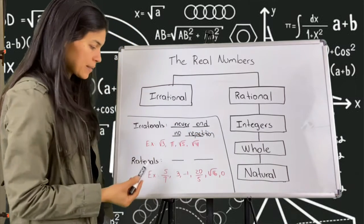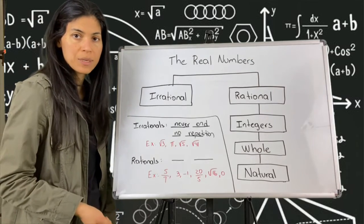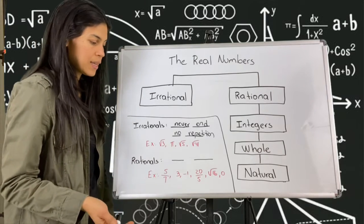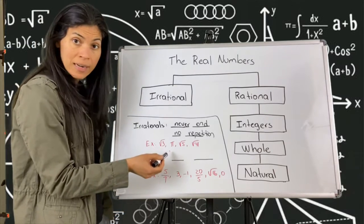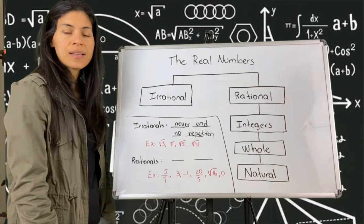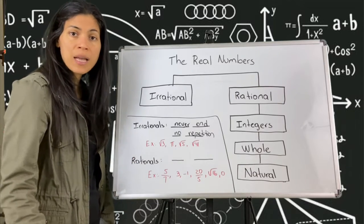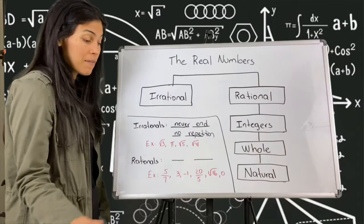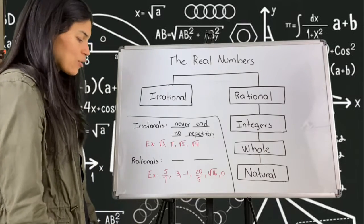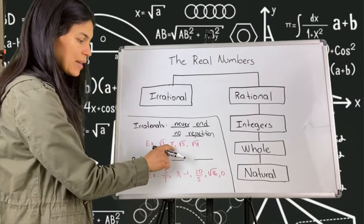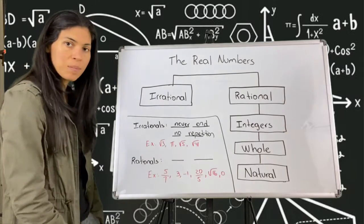Here are some examples of irrational numbers. I'm sure that you have heard of the number pi — it's a number that nobody has fully figured out because it's so long and it never repeats. We cannot express it fully, so we just write the symbol pi.